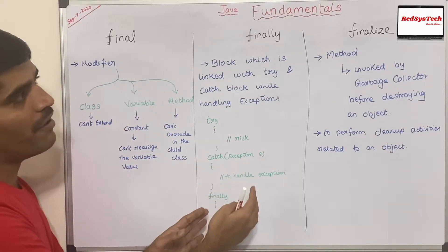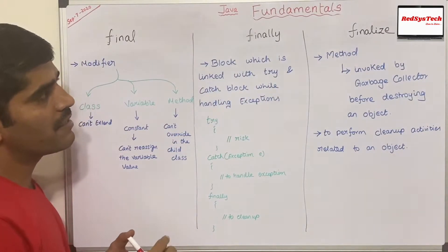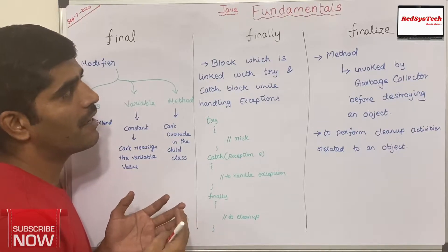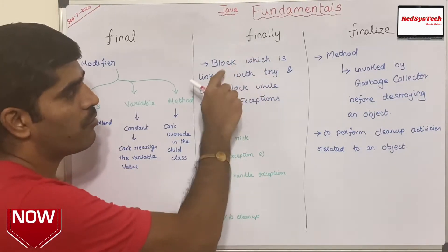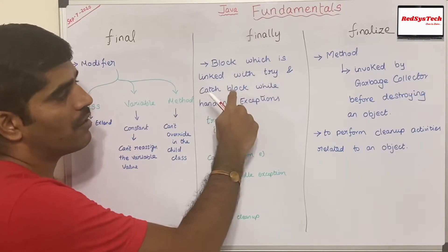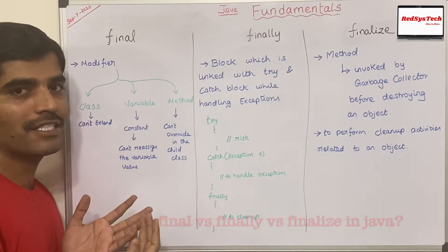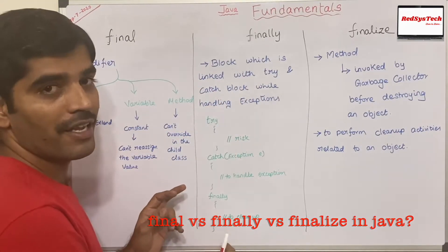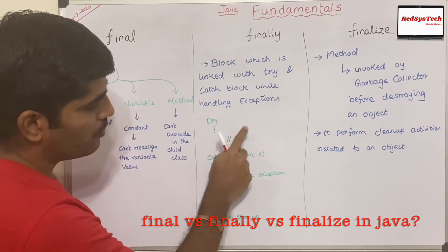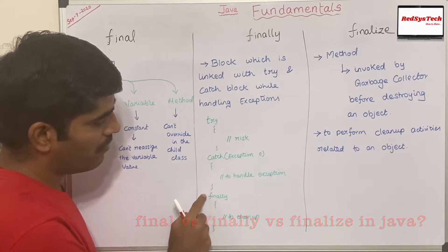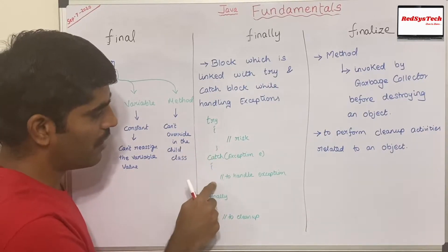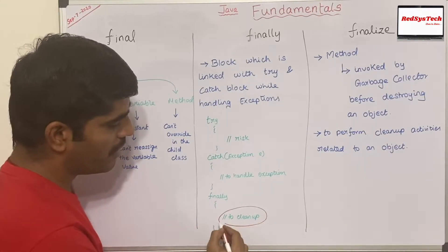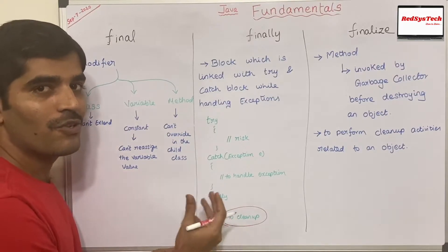Now let's move on to finally. Finally is a block used when handling exceptions in Java. You might already know we have a try-catch block — finally is a block linked with try and catch when handling exceptions. The typical syntax has a try block where you write all your risky code, a catch block where you handle the exception thrown from the try block, and then a finally block.